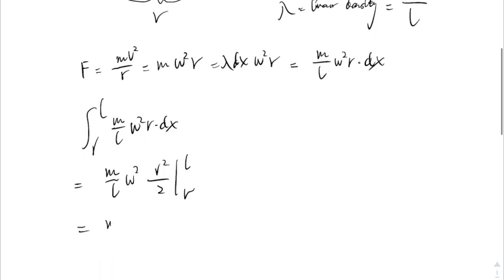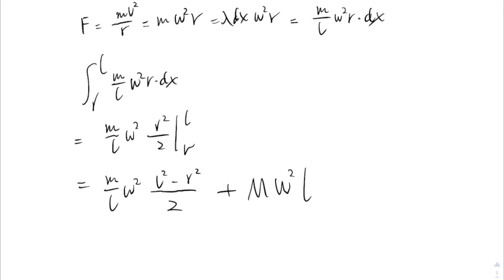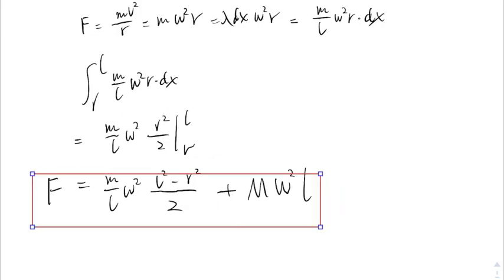Then we do some integration. We got m divided by l times omega squared times l squared minus r squared divided by 2. And then, at last, we need to add up our centrifugal force for the mass ball. So, M times omega squared times l, that will be the centrifugal force for the ball. Then, that will be our final answer.